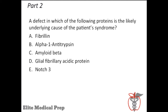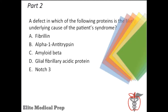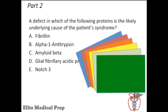This is a straight memorization question. Even though the USMLE has progressively phased out these kinds of questions, they still lurk around the corners of the test. The question asks: what is the defective protein that leads to the complications in patients with Marfan syndrome, such that they develop aortic dissection and other manifestations of their disease? The answer is fibrillin.